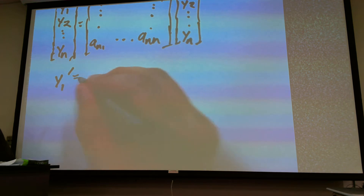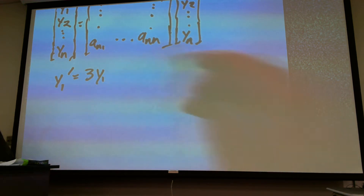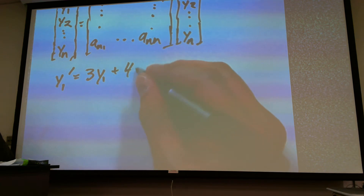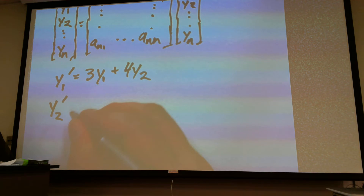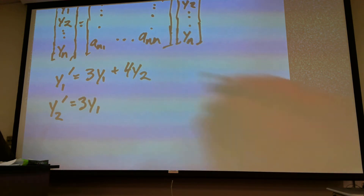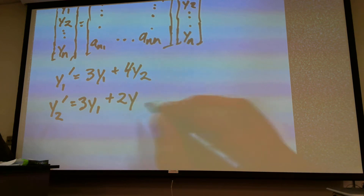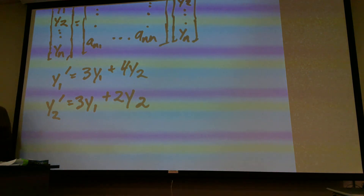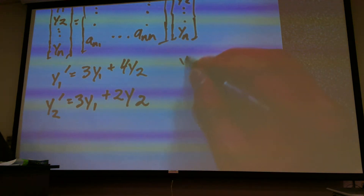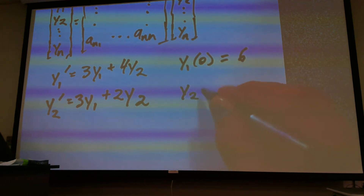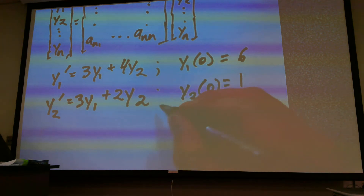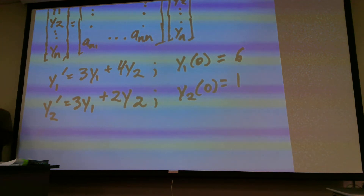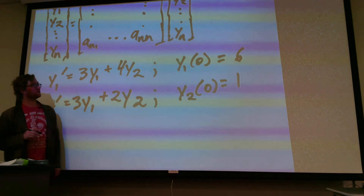So Y1 prime is going to equal 3Y1 plus 4Y2, and Y2 prime is going to equal 3Y1 plus 2Y2. We have to have some initial conditions for this problem. Our initial conditions will be that Y1 of 0 equals 6 and Y2 of 0 equals 1. This is our system of differential equations with our initial conditions.